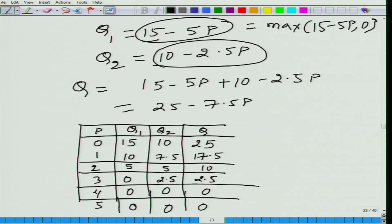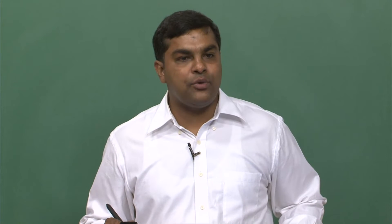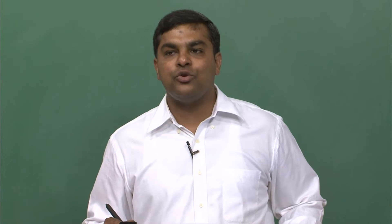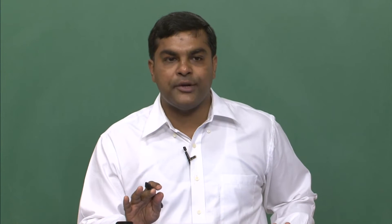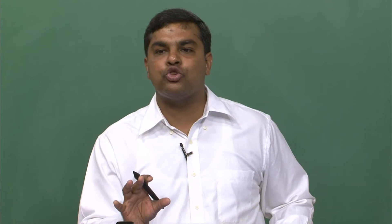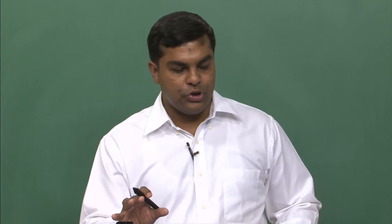We are talking about your buying decision — you cannot buy an amount less than 0. So the minimum amount you can buy from the market is 0. Although we say Q1 = 15 minus 5P, what we mean is: if 15 minus 5P is positive take that value, but if it is negative, we take it as 0.